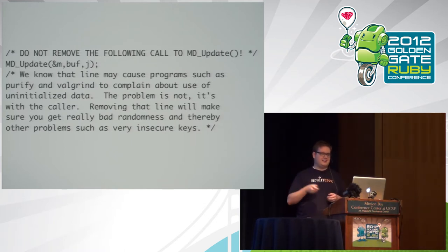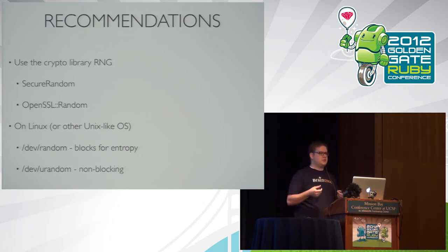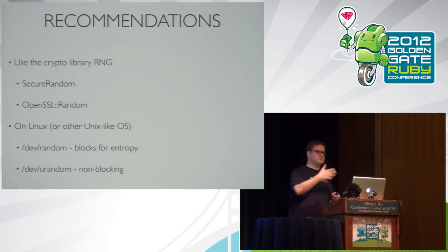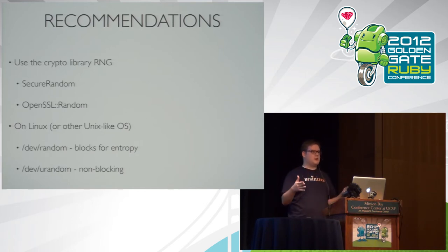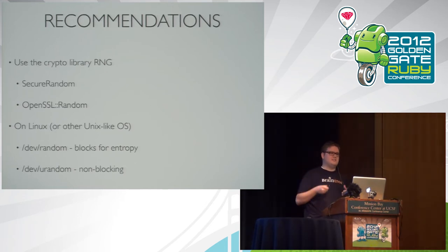Today that line has been appropriately commented to explain what it does so this doesn't happen again. Some recommendations: when dealing with things that require a secure random number generator, use the cryptographic library random number generator. In Ruby we have a great one in the standard library called SecureRandom. We also have the OpenSSL random. SecureRandom will actually wrap OpenSSL random or fall back to some system random on Windows or Unix systems, giving you a consistent and portable API for random number generation.